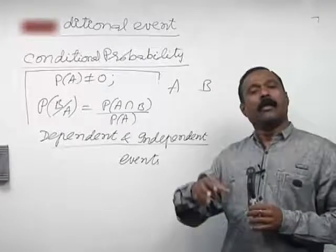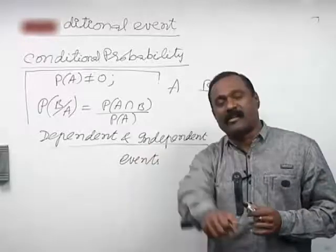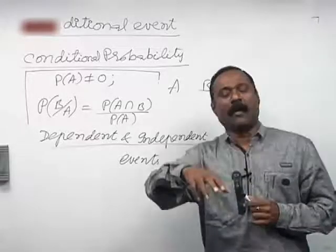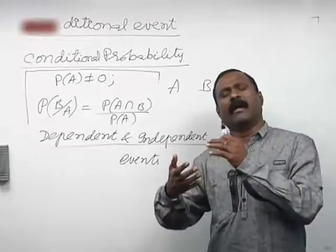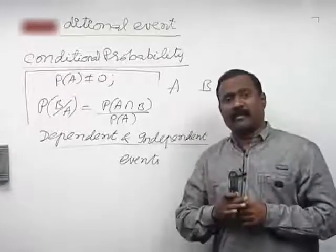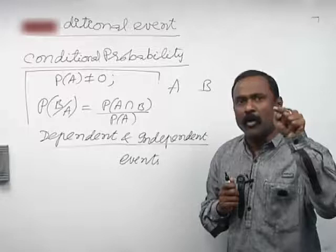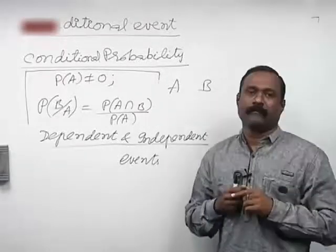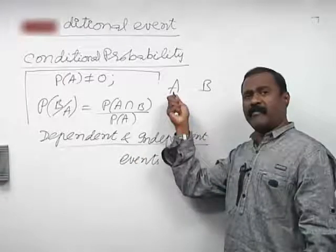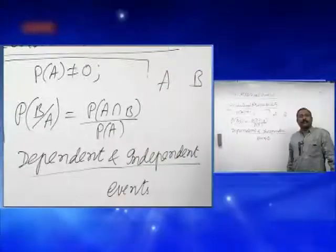But if in the first event I take a ball, see its color, and do not replace it — I keep it in my pocket — then the second time I draw another ball, there are only 16 balls remaining. The total number of balls has changed, meaning the occurrence of event A is influencing the occurrence of event B. That is why they are said to be dependent events.